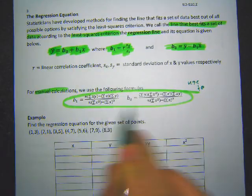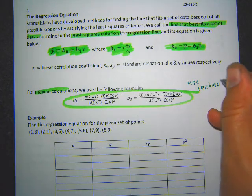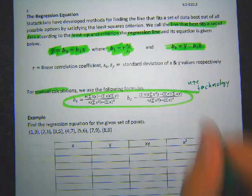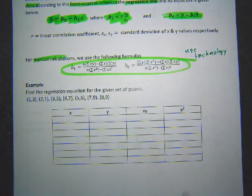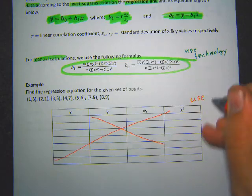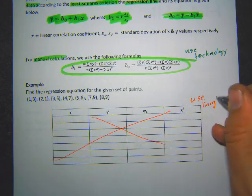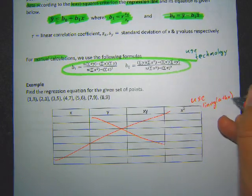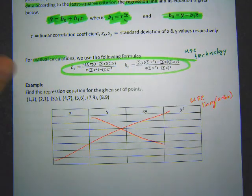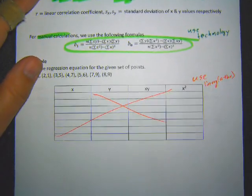The manual formula requires filling out a whole chart, so to save time we'll use technology instead. We'll use the LinReg a+bx function on the calculator because it gives us b₁ and b₀ directly without doing it by hand.